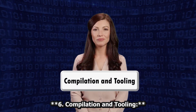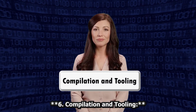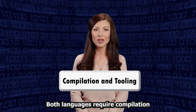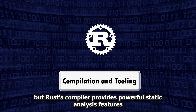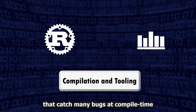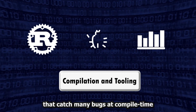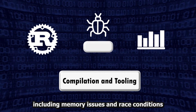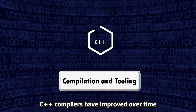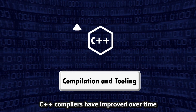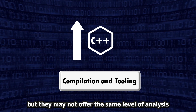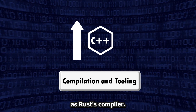6. Compilation and Tooling. Both languages require compilation, but Rust's compiler provides powerful static analysis features that catch many bugs at compile time, including memory issues and race conditions. C++ compilers have improved over time, but they may not offer the same level of analysis as Rust's compiler.